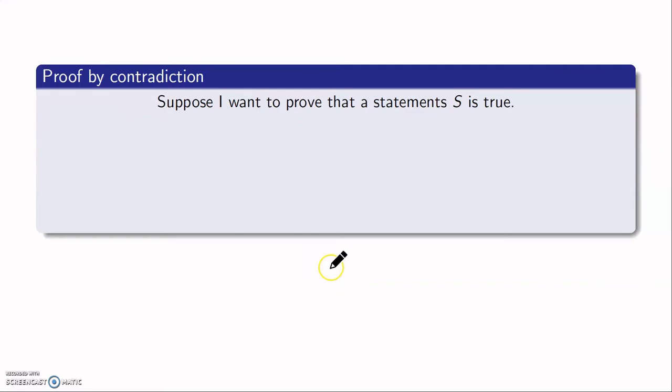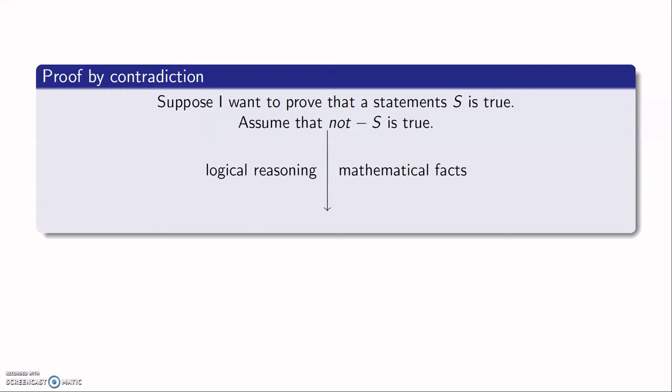Next is proof by contradiction. Suppose I want to prove that a statement S is true. What we do is assume that S is not true — its negation must then be true, since exactly one of S and not-S holds. So we assume not-S is true and use logical reasoning and mathematical facts to arrive at a statement which is always false, a contradiction. This contradiction arises because our assumption was false.